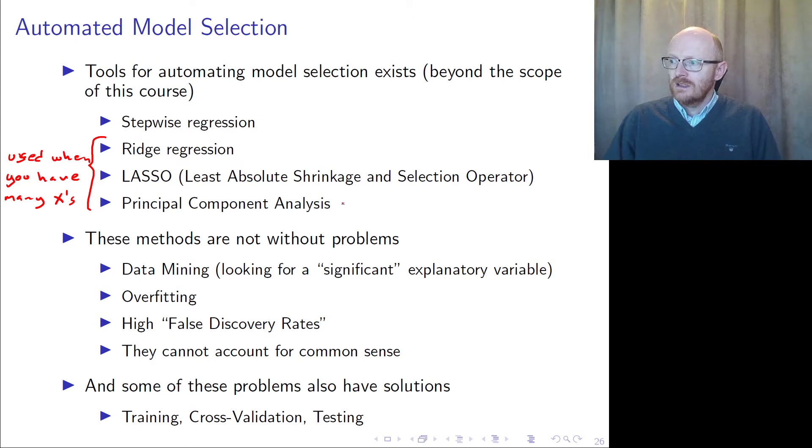Often if you have a lot of variables which are co-moving, then the principal component analysis will make new factors, of which only a few factors will be able to explain a lot of the variation in your Y variable.